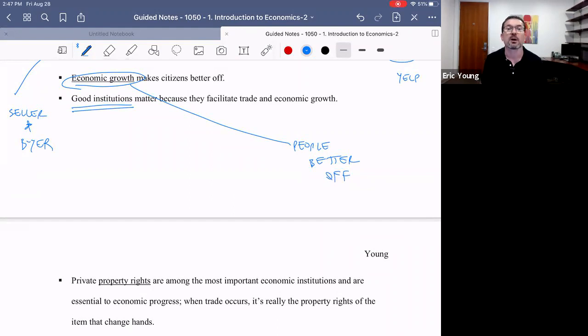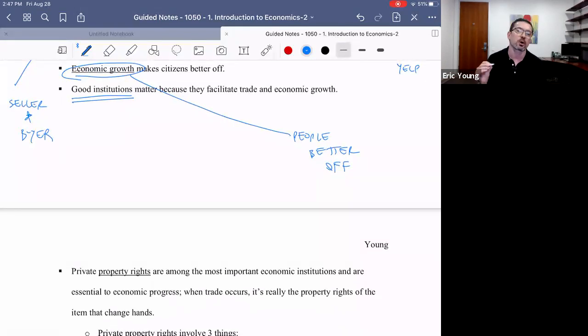Economists believe in the power of institutions. Institutions are broadly defined. They can be things like the university system, a legal system, competitive markets are an institution. All these different kind of cultural and legal constructs that basically make an economy and a society what it is comprise its institutions. We believe in economics that good institutions are critical because at the end of the day, good institutions lead to good economic growth. Almost every modern, successful economy has underneath it good institutions.